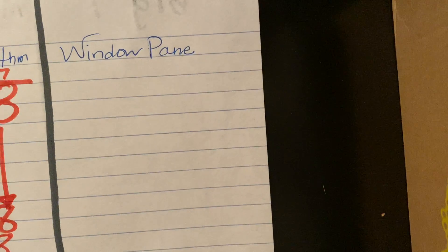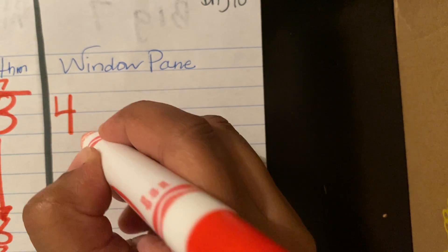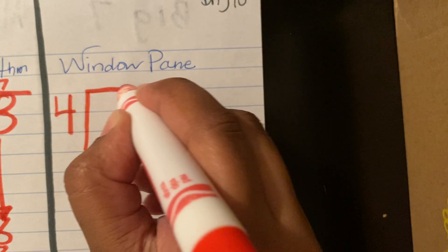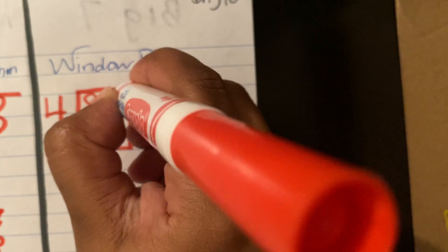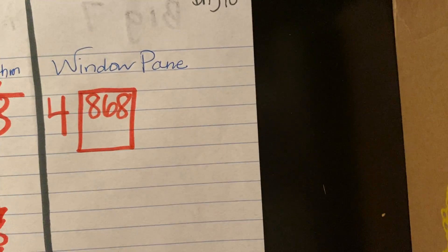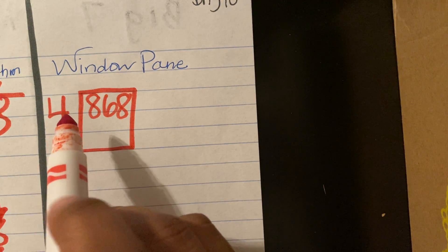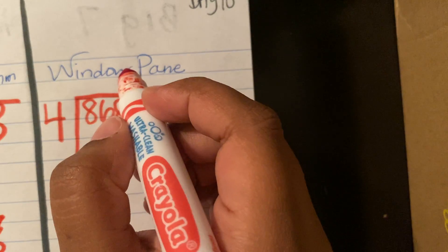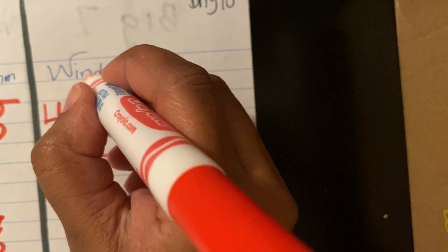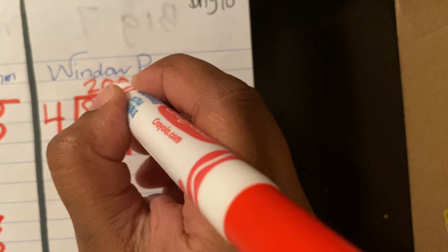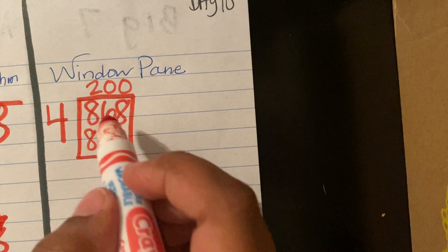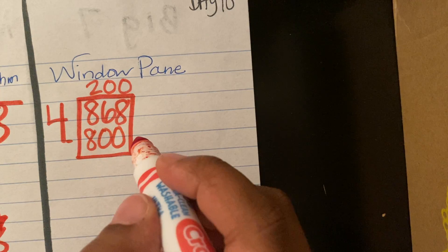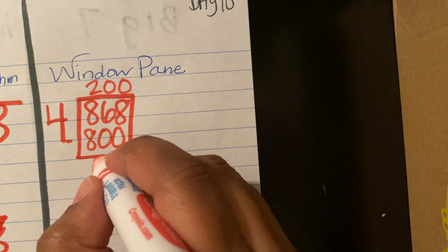In a window pane, we start with our divisor four, and we make our box. We think to ourselves: how close can we get to 868 using four? I know that four times 200 will get me 800. So I subtract 800 from 868, which gives me 68.